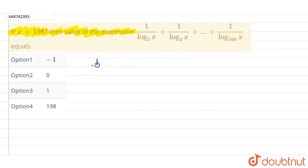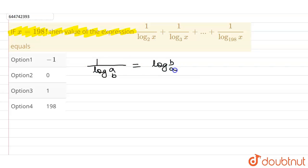If we have 1 upon log a to the base b, then we can write it as log of b to the base a.